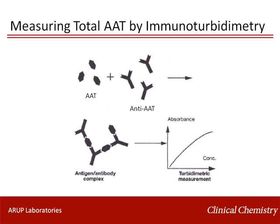Total AAT concentration is measured using immunoturbinometric techniques. In this technique, antibodies specific to AAT are added to the serum specimen. The antibodies will form aggregates with AAT, leading to a specimen with increased turbidity. Immunoturbinometry measures the absorbance of light by the sample, so the concentration of AAT will be directly proportional to the amount of absorbed light.